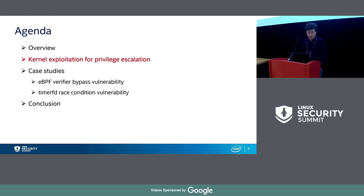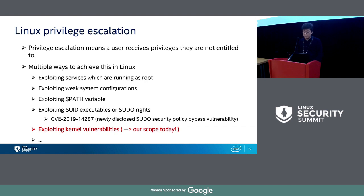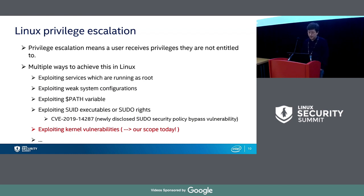The next part: kernel exploitation for privilege escalation. The definition of privilege escalation, described simply, is that a user receives privileges they are not entitled to. There are several methods to achieve privilege escalation in Linux — for example, exploiting root services, weak system configuration, environment variables, SUID executables, or sudo rights. I list CVE-2019-14287 here because it's a newly disclosed sudo security policy bypass vulnerability disclosed just a few days ago. What I want to introduce is exploiting kernel vulnerabilities — that's our main topic today.